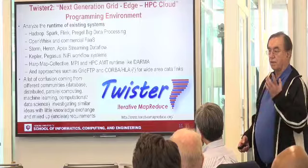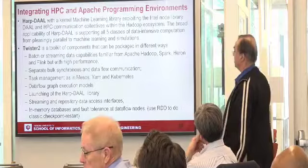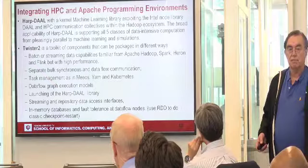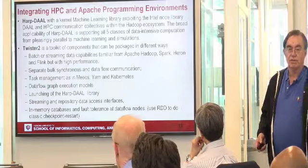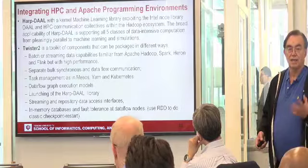Spark, Hadoop, and similar systems each give you a certain choice of technology for various key components, which are listed here. Spark always does data flow communication, whereas MPI always does bulk synchronous processing or equivalent — and you need both. For MPI, there is no data flow communication library, whereas MPI actually has the right algorithms that should be put into a data flow library.